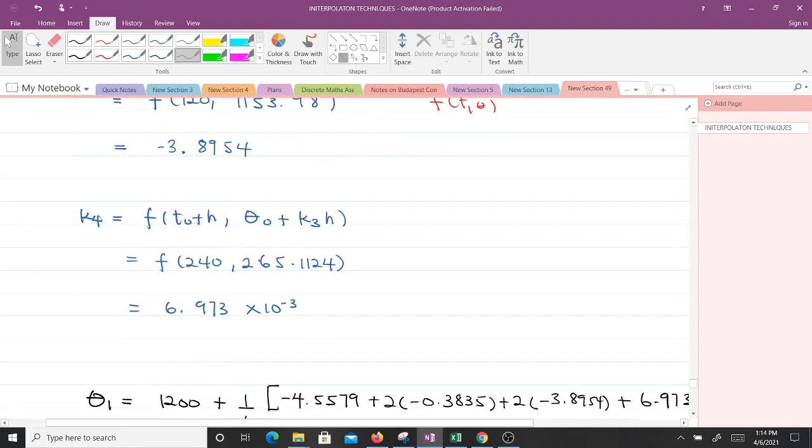Then K4 is given by this relation. When we make substitutions and make evaluations, we will get this. And evaluating that is going to give us 6.973 times 10 exponent negative 3.